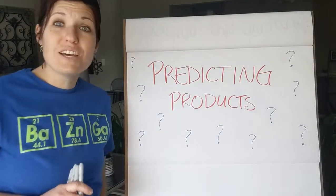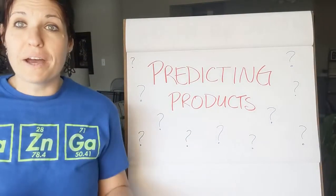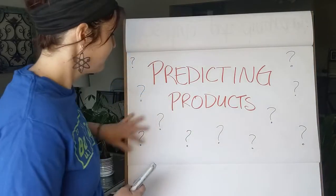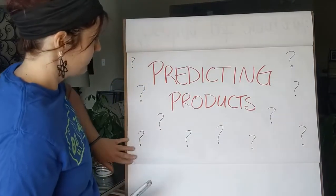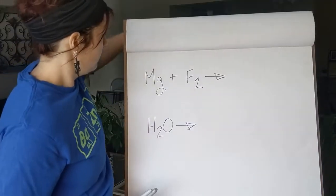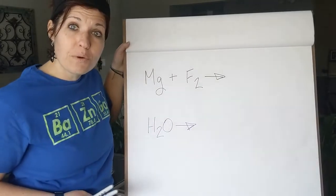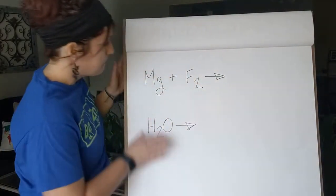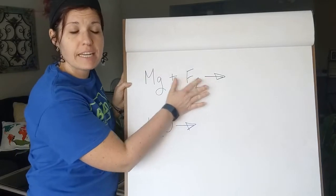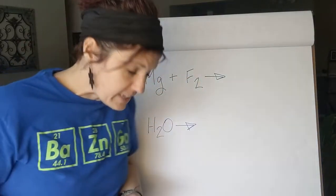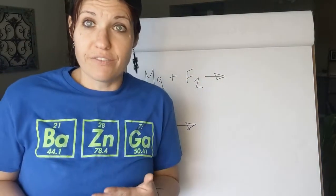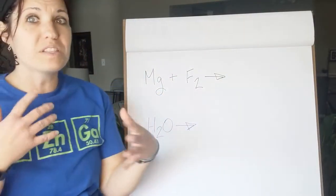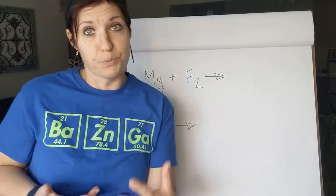Hey everybody, this video is going to be all about how to predict products of various reactions. The first one we're going to start with is magnesium plus fluorine. When we are predicting products of various reactions, we want to get used to recognizing what type of reaction we're looking at.